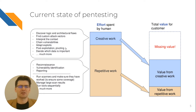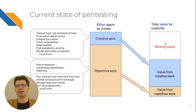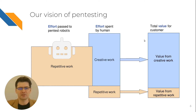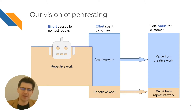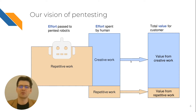Because of this there is little space left for the creative work which actually brings much more value to the customer than the repetitive work. Among this creative work it's discovering logic flaws, architecture flaws, finding custom attack vectors, chaining vulnerabilities and exploits, post exploitation and so on. So because of this the customer is left with some missing value, and what we propose is that much of the repetitive work — about 80% — be passed to an automated tool which we call a Pentest Robot, leaving much more space for the human to perform creative work which will actually generate much more value.